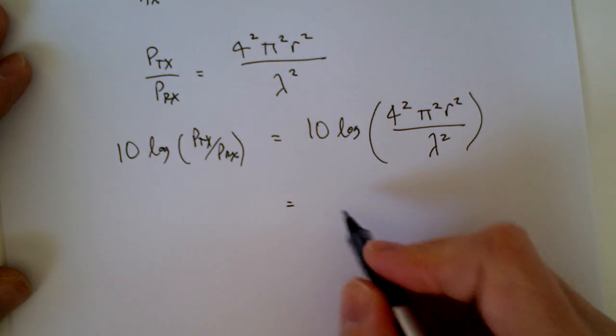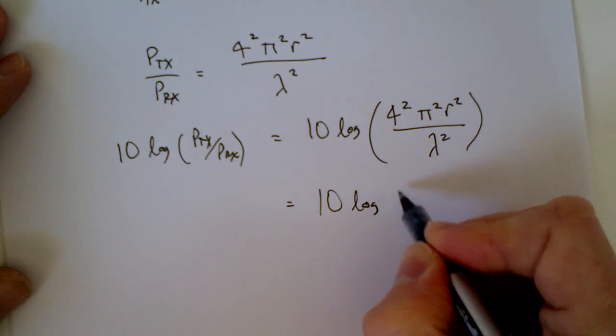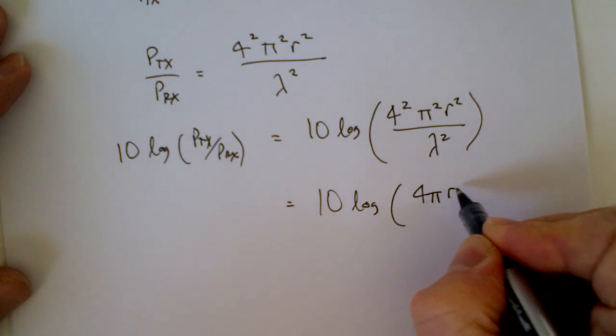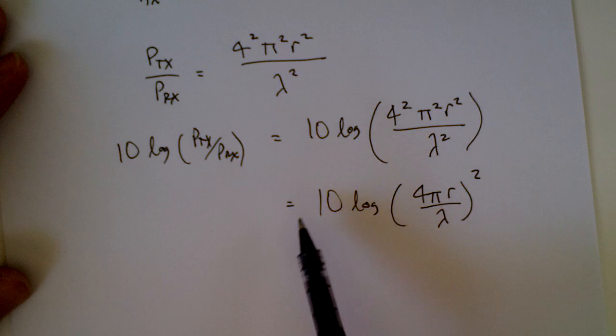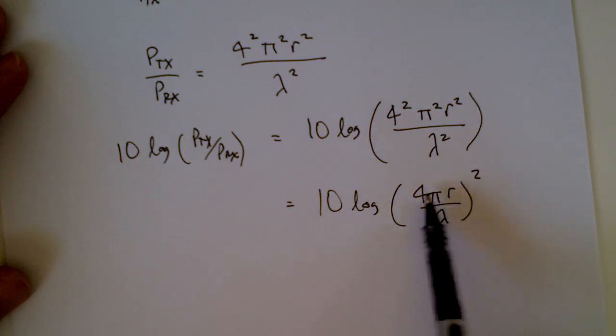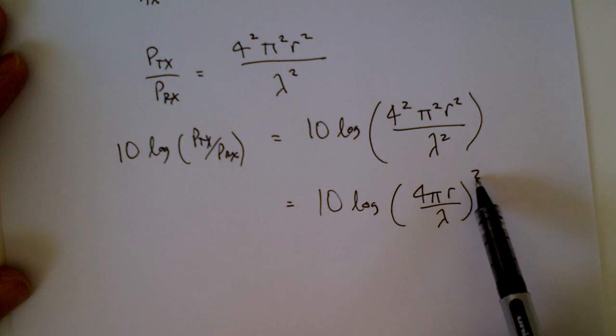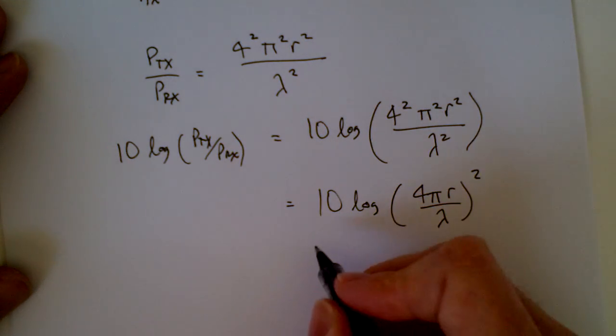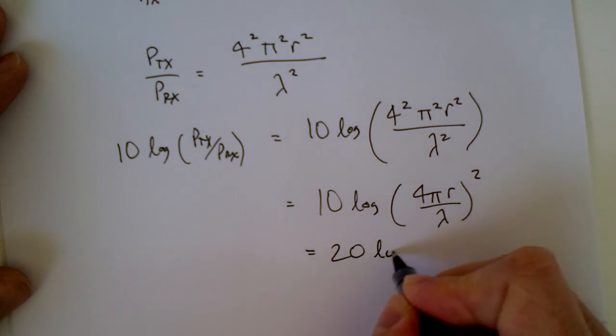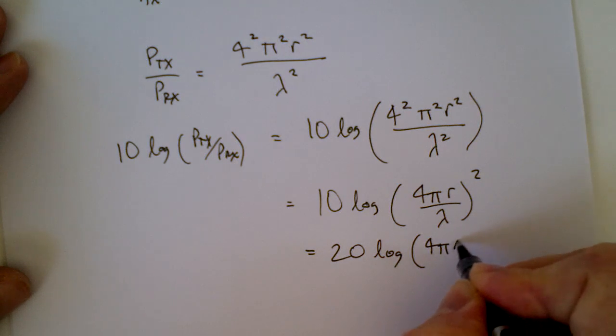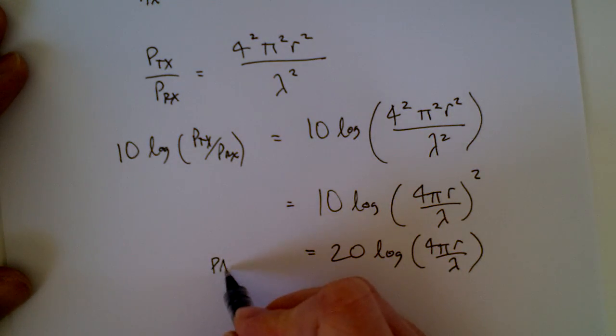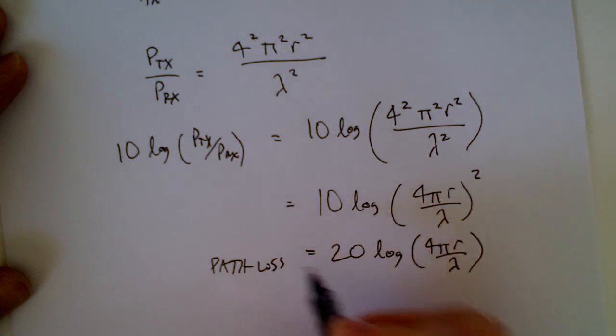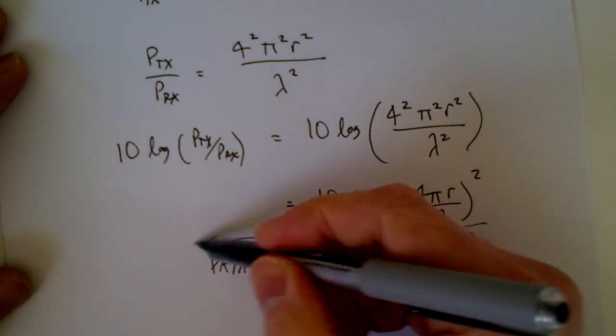But that's really the same as 10 log of 4 pi r over lambda squared. And you know that if you log something and that is squared, it's the same as saying 2 log of that without the square. So that's really equal to 20 log of 4 pi r over lambda. So that's path loss.